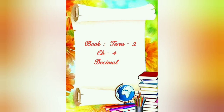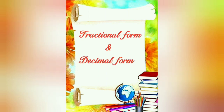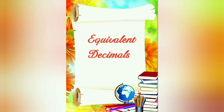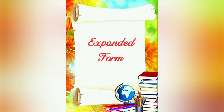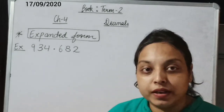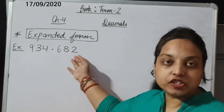Nowadays we are doing Chapter 4 on decimals, in which we have covered decimal numbers, fractional form and decimal forms, how to read a decimal number, and equivalent decimals. Now the next topic is expanded form. In this topic we will learn how to present a number by breaking it as the sum of the place value of each digit.